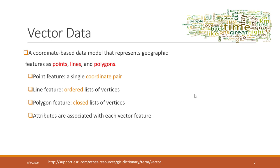GPS points and LIDAR data are also considered vector data. Vector data is a coordinate-based data model that represents features in three categories: points, lines, or polygons.